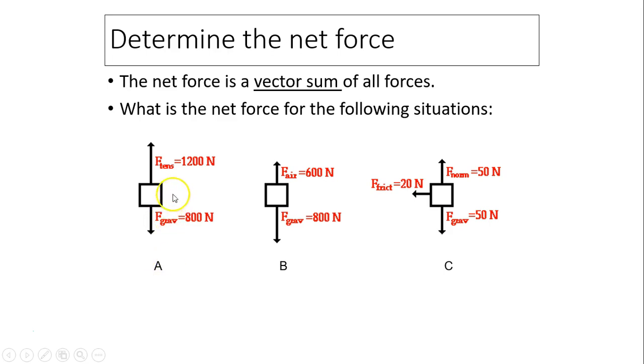For example, the net force for example A would be 400 Newtons upward. How did I get 400? You use up is positive: 1200 plus negative 800, that's how you have positive 400. Positive means upward.